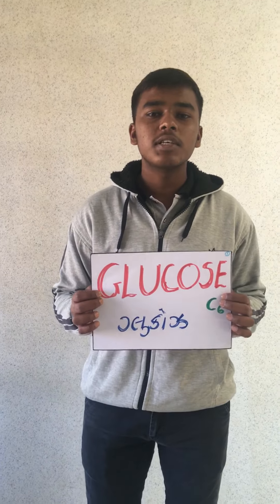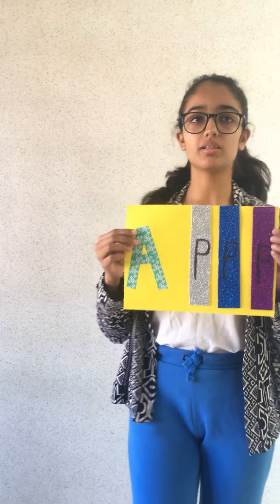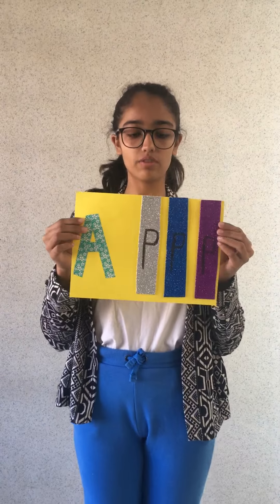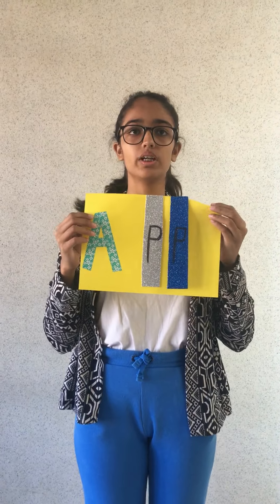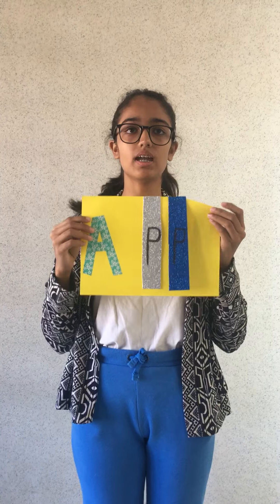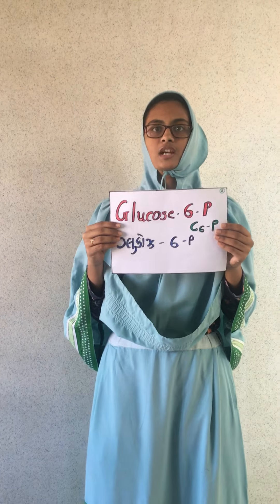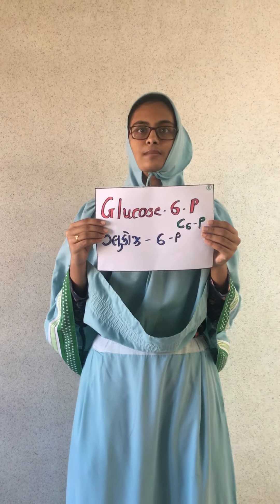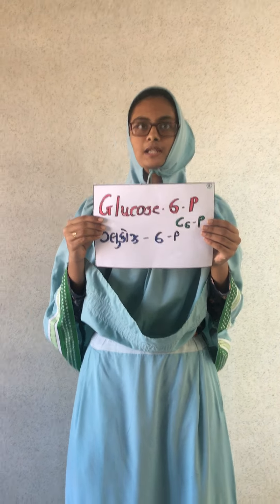I am glucose, a 6-carbon compound. I am ATP, adenosine triphosphate. My dephosphorylation occurs and I am converted into ADP, adenosine diphosphate. My 1 phosphate is received by glucose and it is converted into glucose-6-phosphate. I am glucose-6-phosphate; I have 6 carbons and 1 phosphate, and I received that phosphate from ATP.